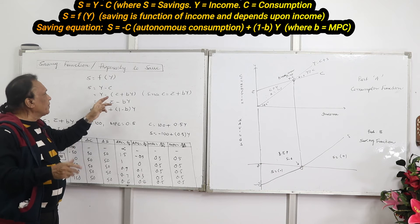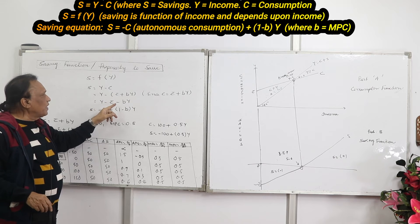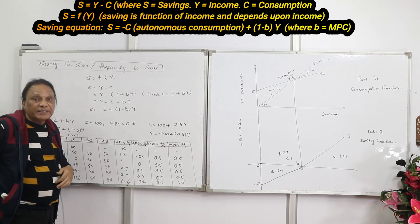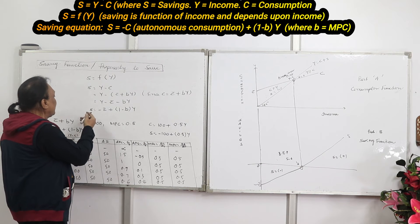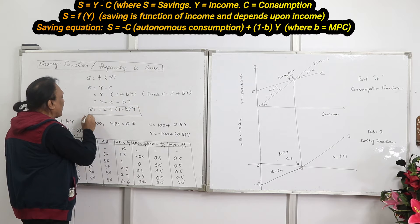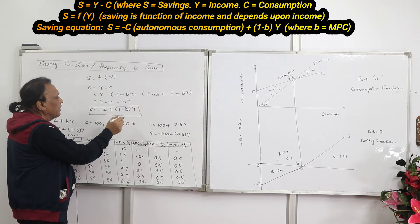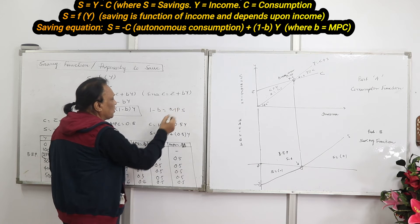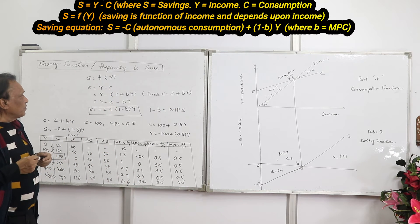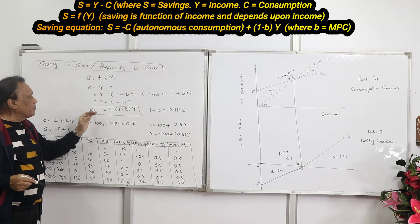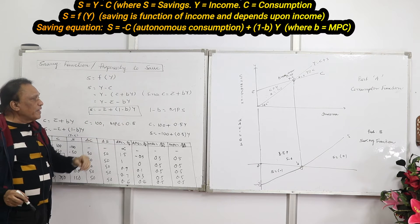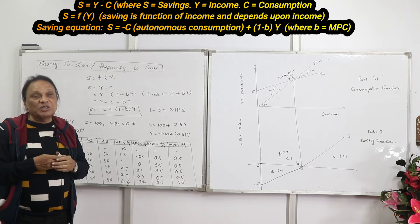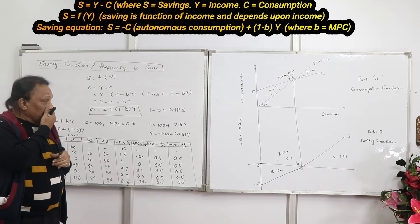Expanding the brackets, S = Y − C̄ − bY. So the saving function equation is: S = −C̄ + (1 − b)Y. Here (1 − b) stands for MPS, marginal propensity to save. If you want a simple version to remember: S = −C̄ + (1 − b)Y, where (1 − b) is MPS.